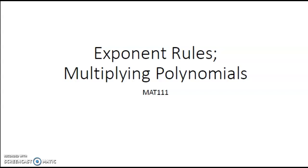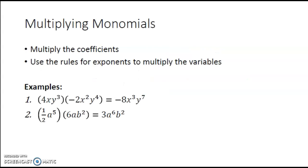We are going to break down multiplication step by step, starting with multiplying just two monomials together. If you can multiply two monomials together, you can multiply any polynomials. When we are multiplying monomials, we are going to multiply the coefficients, and then use the rules for exponents to multiply the variables — and that's only if we have the same variable in each of the monomials.